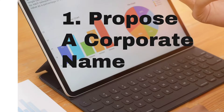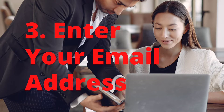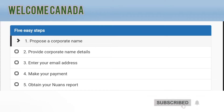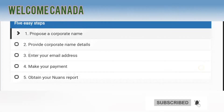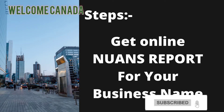Now let's discuss the steps you need to follow for the NUANS report. Step one: propose a corporate name. Step two: provide corporate name details. After that, enter your email address. Then do the payment. Finally, obtain your NUANS report. You have to follow these five steps to order your NUANS report.